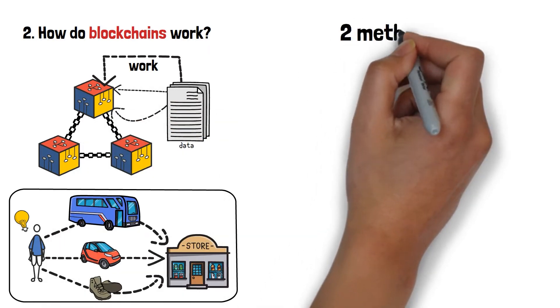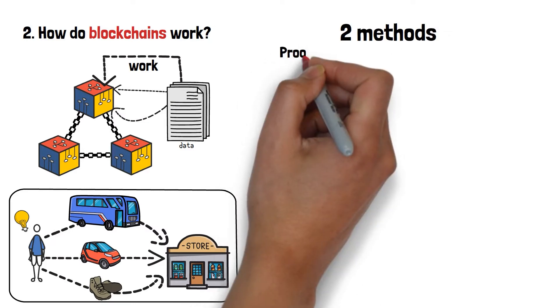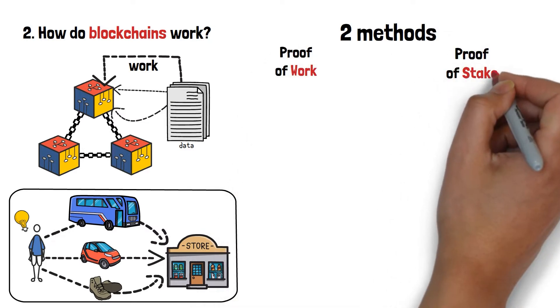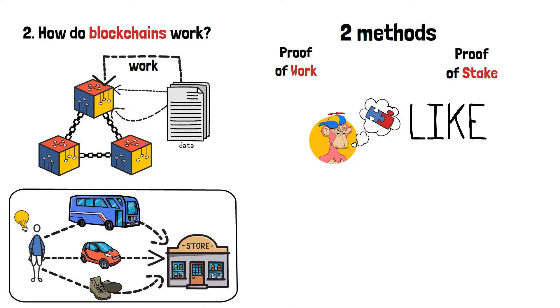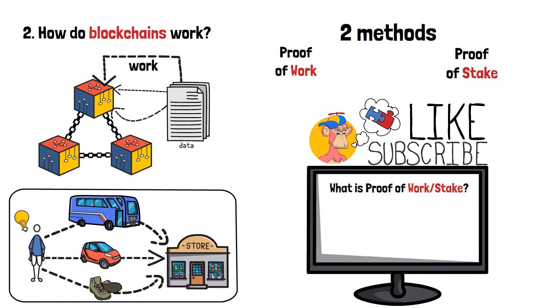The two major methods are called proof-of-work and proof-of-stake. I'll keep it simple today, and only talk about these two. Hit those like and subscribe buttons, if you want me to explain those two in a very simple manner, in a separate upcoming video.